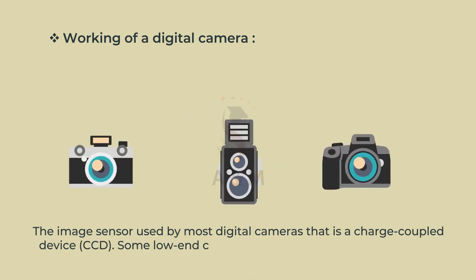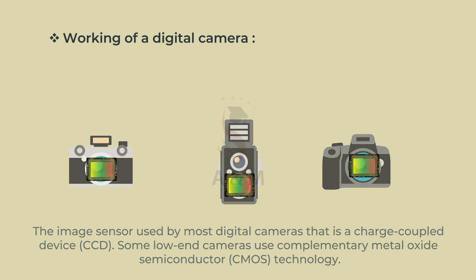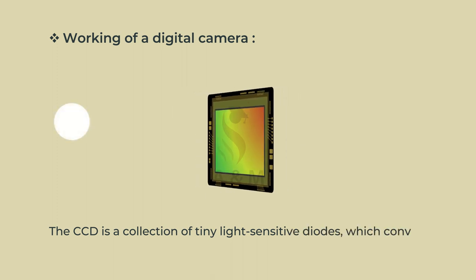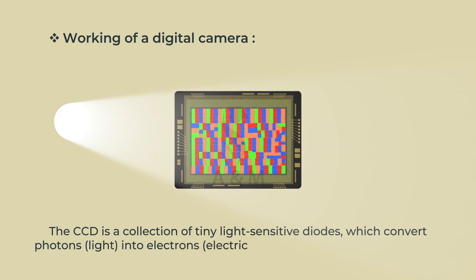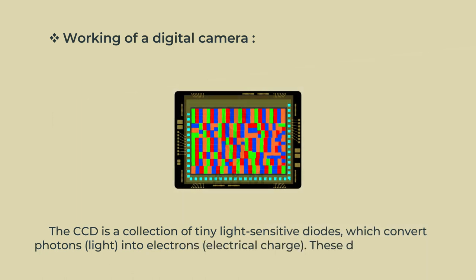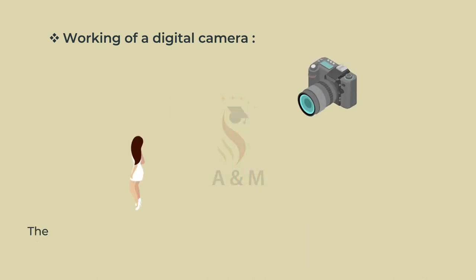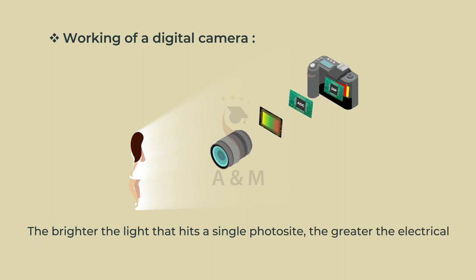Some low-end cameras use complementary metal oxide semiconductor, i.e. CMOS technology. The CCD is a collection of tiny light-sensitive diodes which converts photons (light) into electrons (electrical charge). These diodes are called photocytes. Each photocyte is sensitive to light. The brighter the light that hits a single photocyte, the greater the electrical charge that will accumulate at that site.